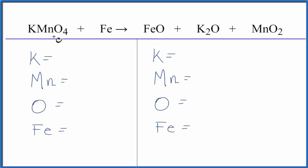In this equation we have KMnO4 plus Fe, potassium permanganate plus iron. Let's count the atoms up to balance the equation. We have one potassium, one manganese, four oxygens, and one iron.